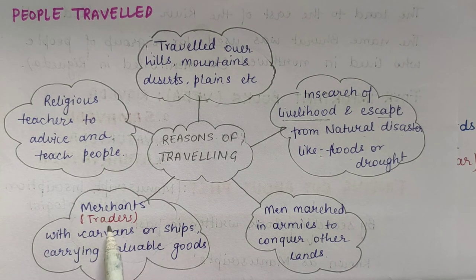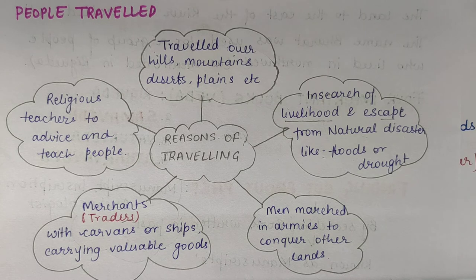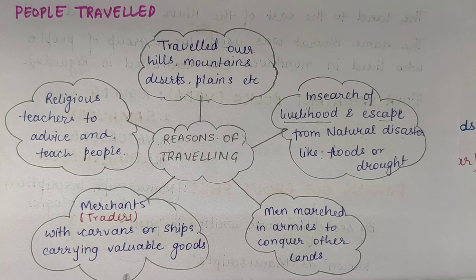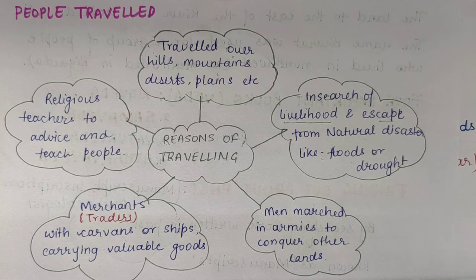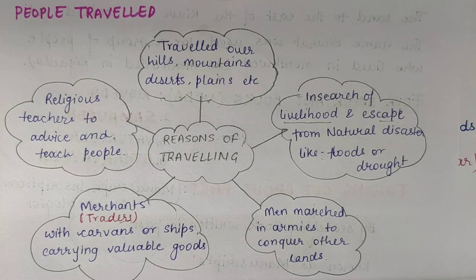Third, merchants, who are also known as traders — jo traders hote na, jo saman bejhte kharid te hain dusri jagah jaake — they are traders. With caravans or ships carrying valuable goods, merchants and traders were moving from one place to another so that they could buy or sell goods in other places.